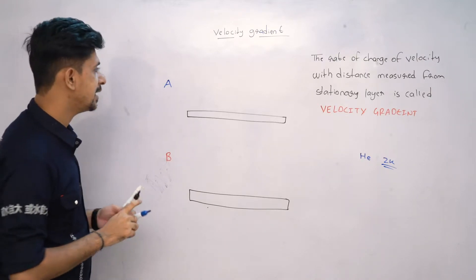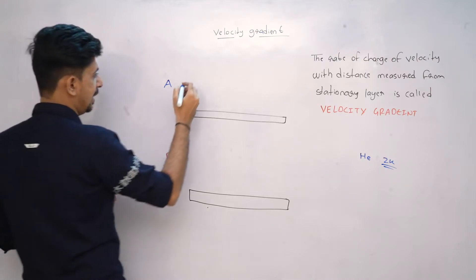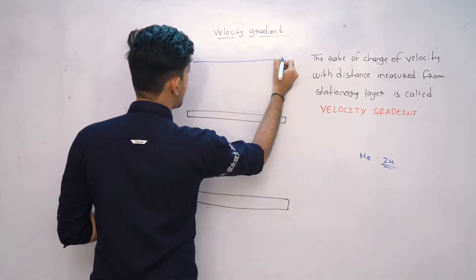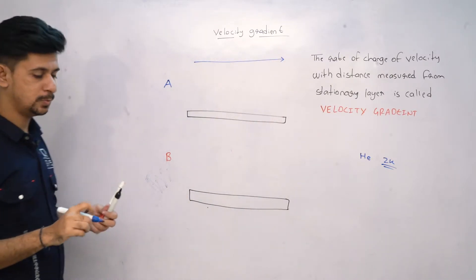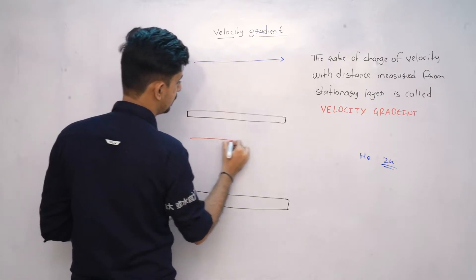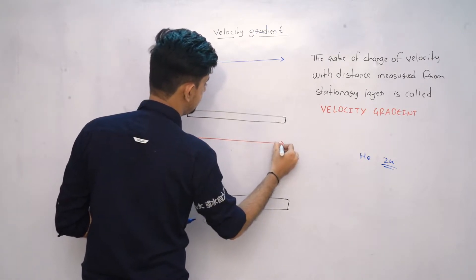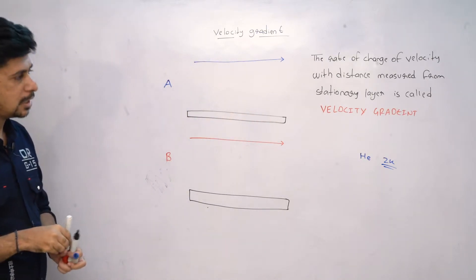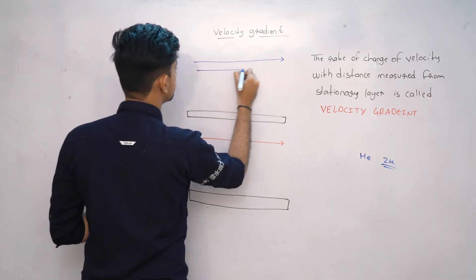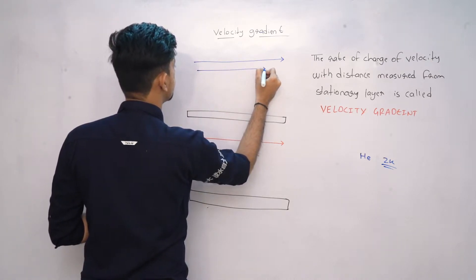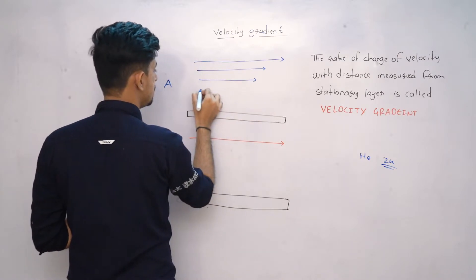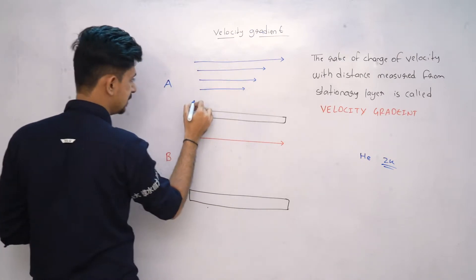Now for A, the top layer is high velocity. This is obvious — it is high velocity. And for B, this is also high velocity. So both have the same velocity at the top layer.